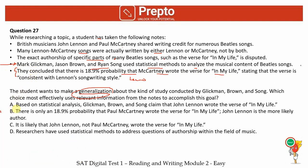Option A is about a statistical analysis claim, which is a generalization but covers only one aspect. B is doing the same thing — A and B are very similar options. C is also similar. D is best because it gives us a general idea of what these researchers were trying to do: they were using statistical methods to address questions of authorship.